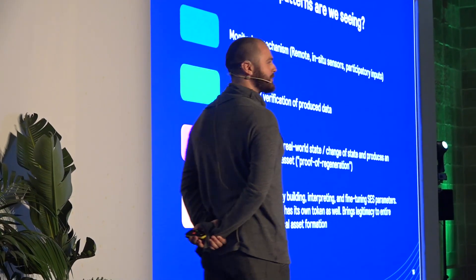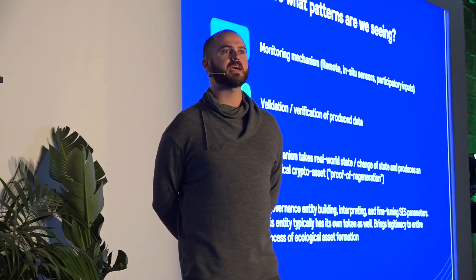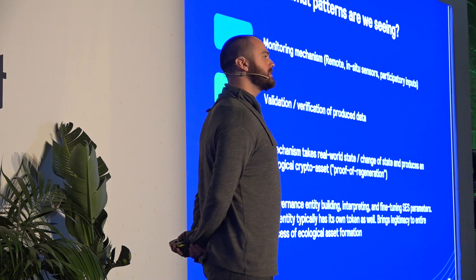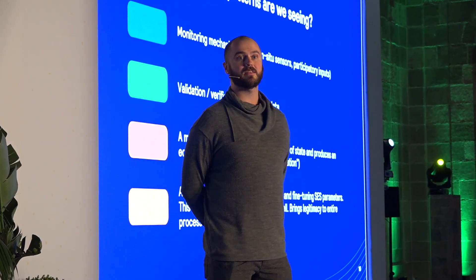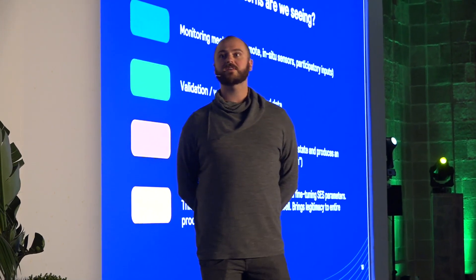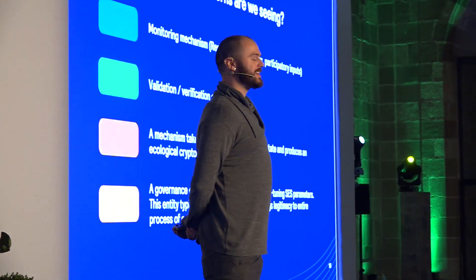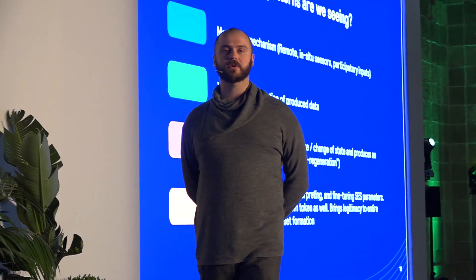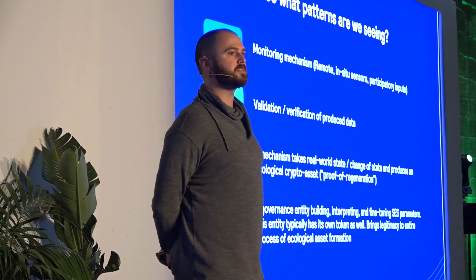So what patterns are we tangibly seeing? First, a monitoring mechanism. Second, validation. Third, some sort of mechanism for tokenizing this data. And fourth, there is a governance entity — the social part of the socio-ecological system — which lends its legitimacy to this entire process, fine-tuning the SES parameters. One important thing to note is that this entity has its own token, typically. In the case of Toucan, they will have a token. Regen Network has a token, and Open Forest Protocol has a native token representing governance rights in their DAO.